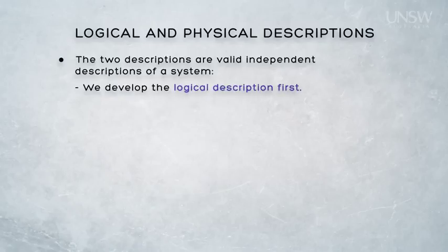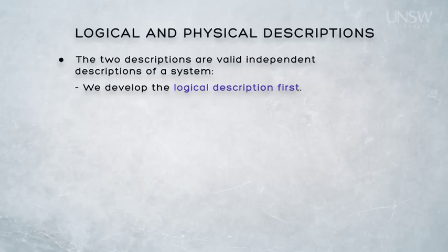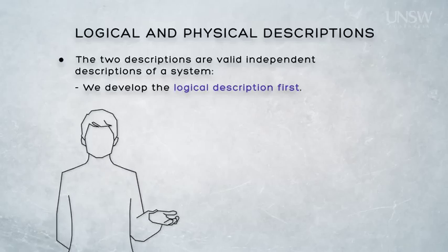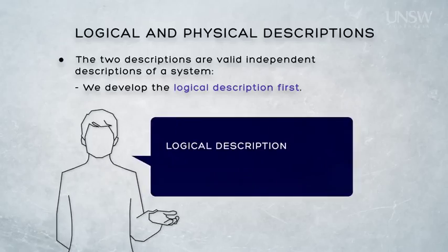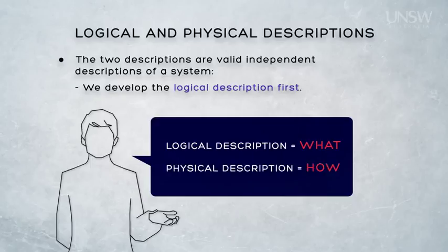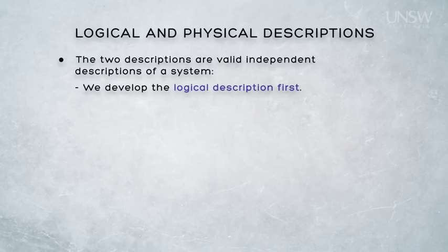In one sense it's axiomatic that we develop that logical description first. In order to determine whether any particular physical system is appropriate — that is, how we're going to do it — we must first understand what it is we want to do. What purpose do we want the system to serve? We therefore need to focus on the logical description, the what, before we examine a series of candidate physical descriptions, the hows, of how we might develop the system — one of which is going to be chosen as our preferred physical solution.